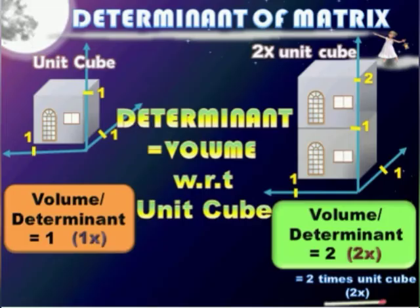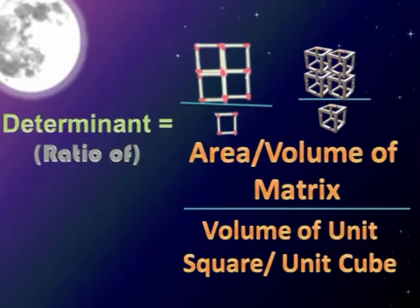The determinant of a matrix is how many times the volume or the area of the matrix is compared to that of a unit cube or a unit square. If the determinant is 2, it means whatever you are dealing with has twice the area or volume of a unit cube or a unit square.